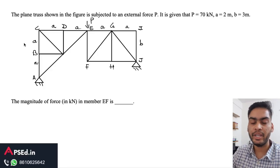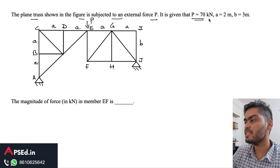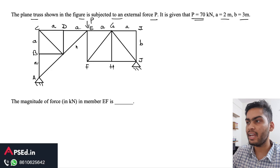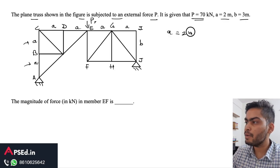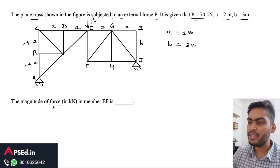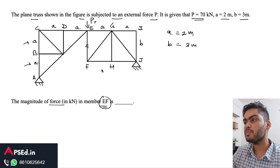This question is from GATE 2022 forenoon session, related to truss. The plane truss shown in the figure is subjected to an external force P equal to 70 kilonewtons, with a equal to 2 meters and b equal to 3 meters. The load P is applied at joint E, and we need to find the magnitude of force in member EF, the vertical member.